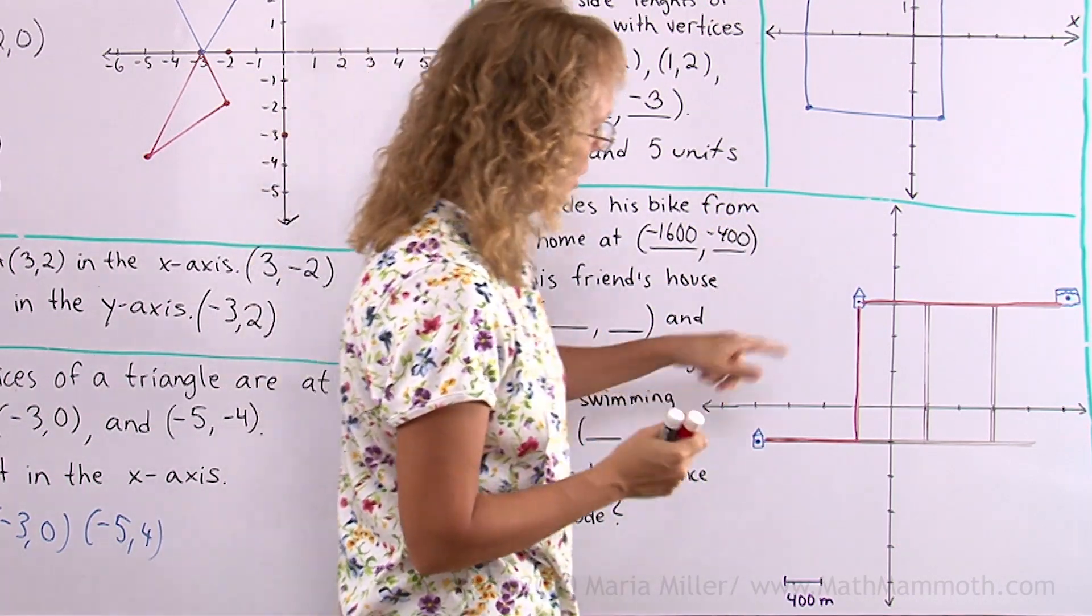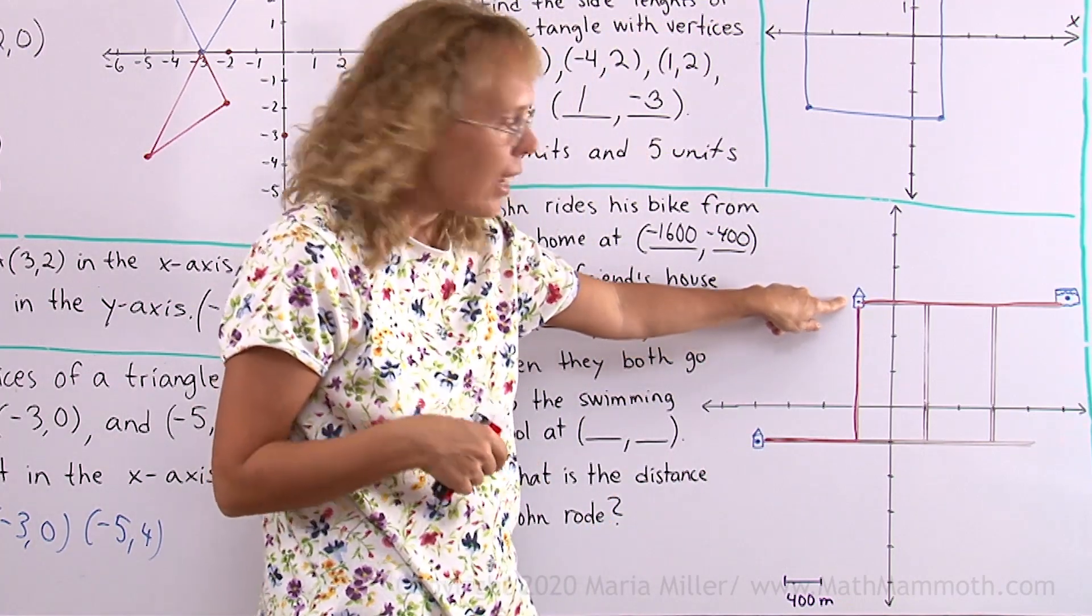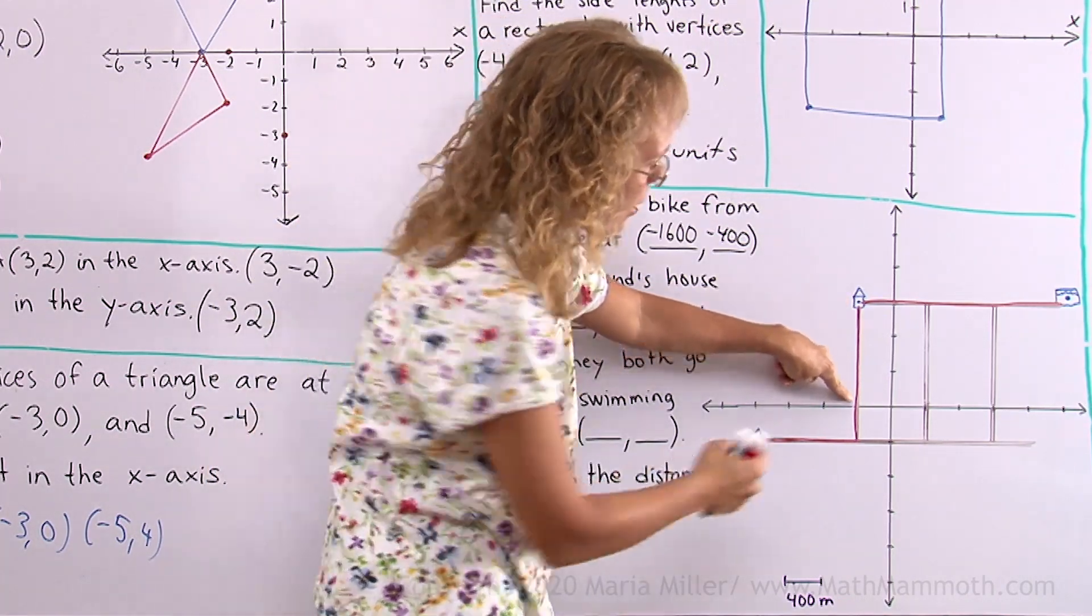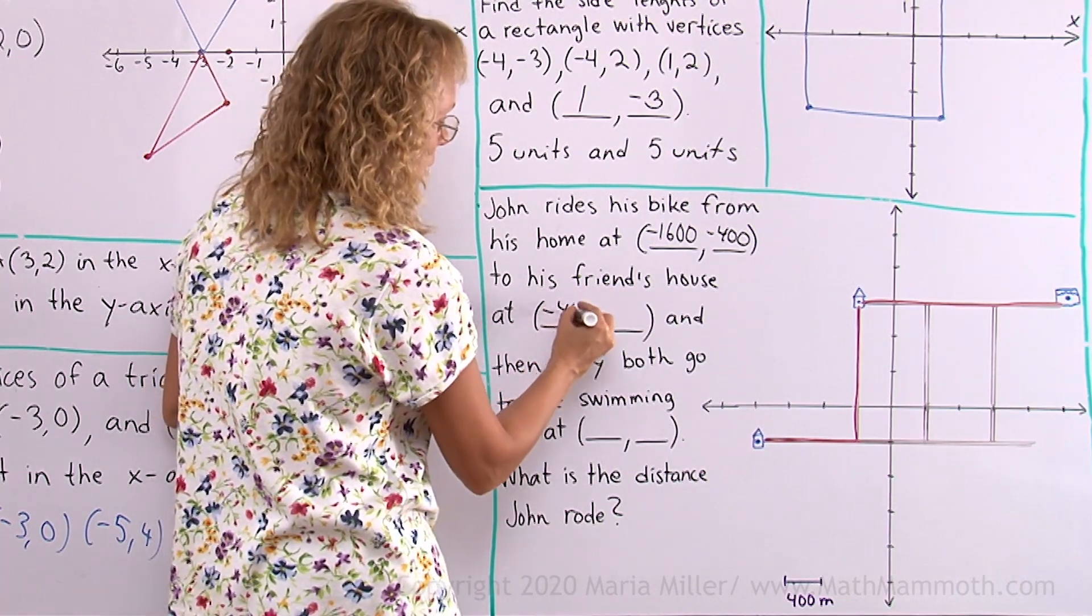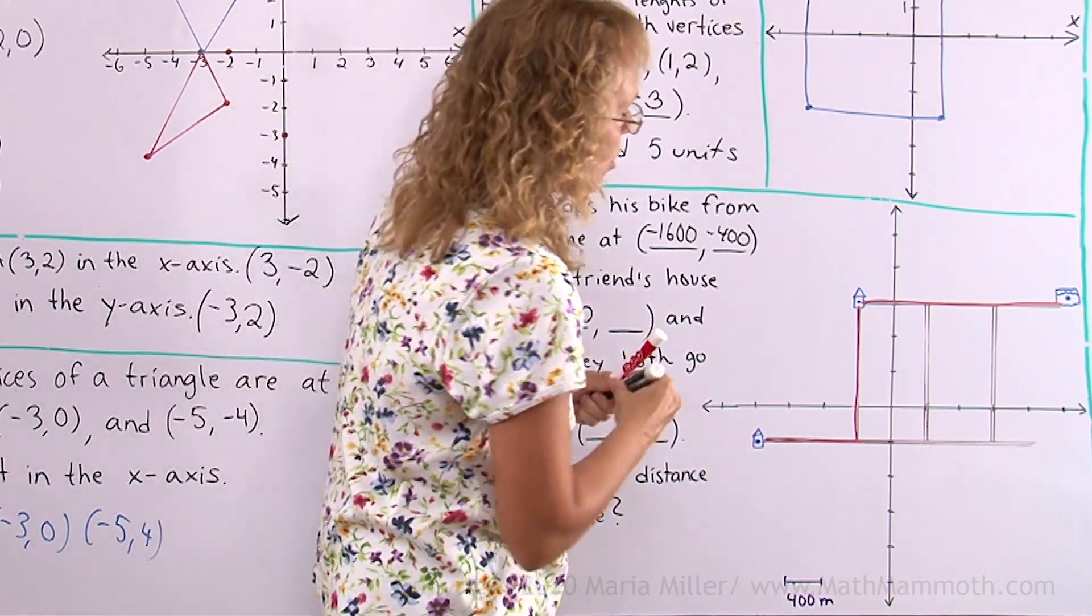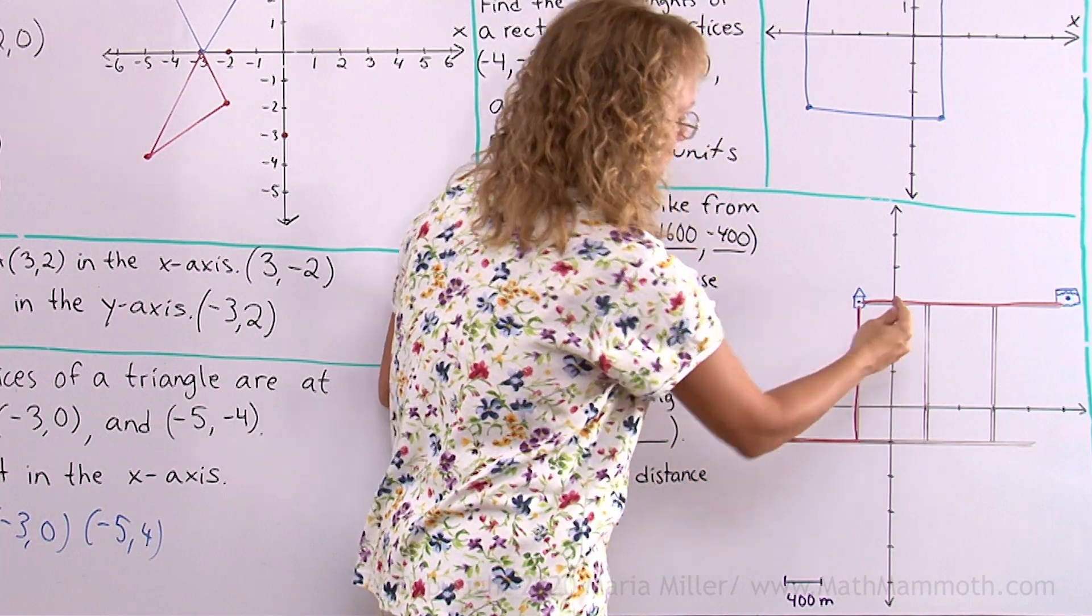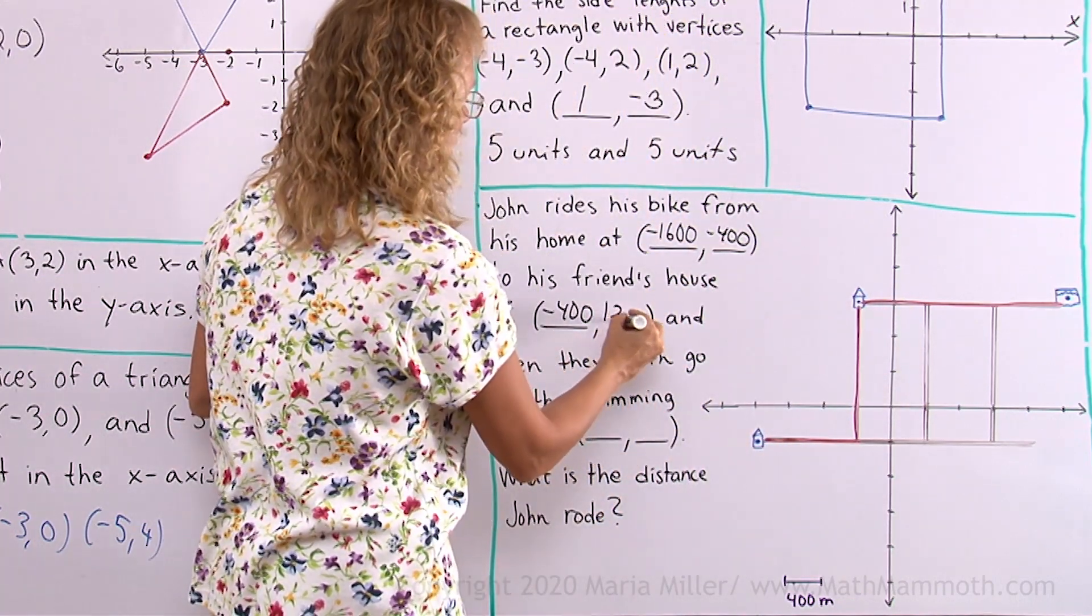Friend's house over here. First we look at the x-coordinate. It would be this. Just one negative unit, which means negative 400. And then y-coordinate over here would be one, two, three units. That makes it 1200.